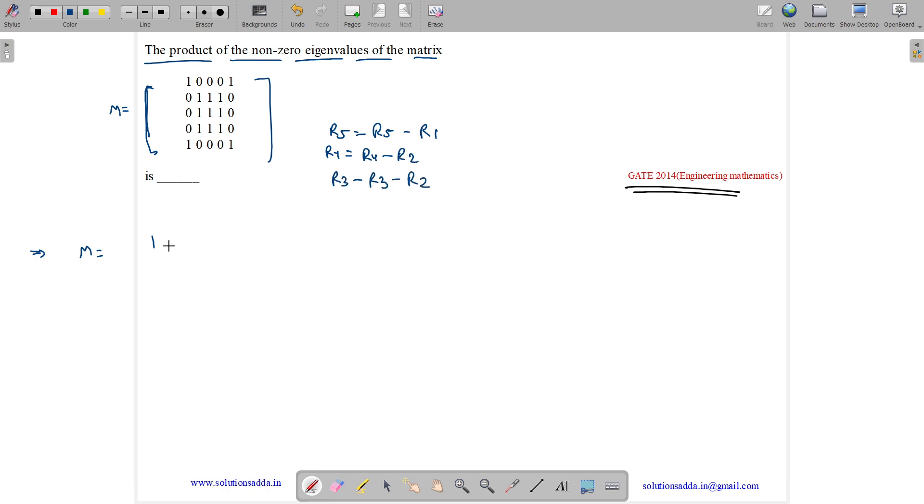So what will be our resultant? We will get 1 0 0 0 1, 0 1 1 1 0, then R3 equals to R3 minus R2, so it will come out to be all zeros. R4 equals to R4 minus R2, it will be all zeros. R5 equals to R5 minus R1, it is all zeros.